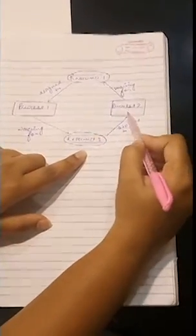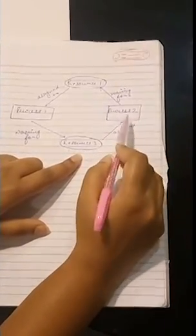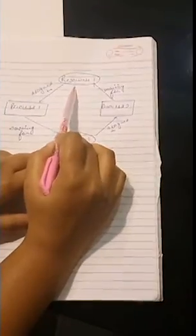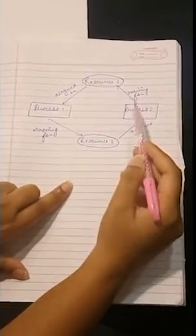So now in this situation, what is happening? Process one is having one resource but it cannot complete its operation until it gets resource two. And in order to get resource two, it should be freed by process two, but it is already with process two and process two will only free this resource when it will get resource one.